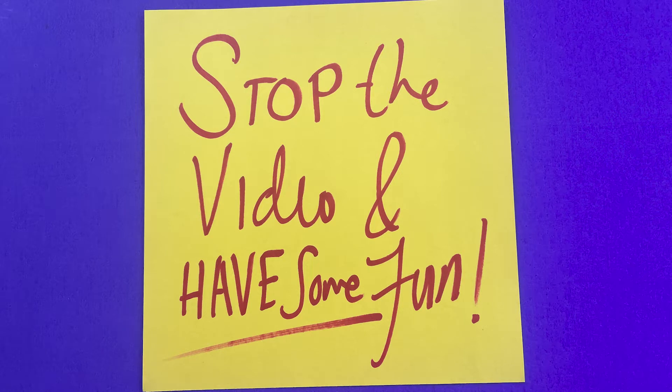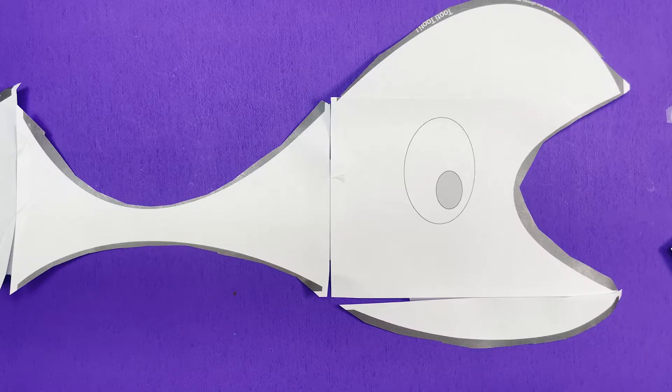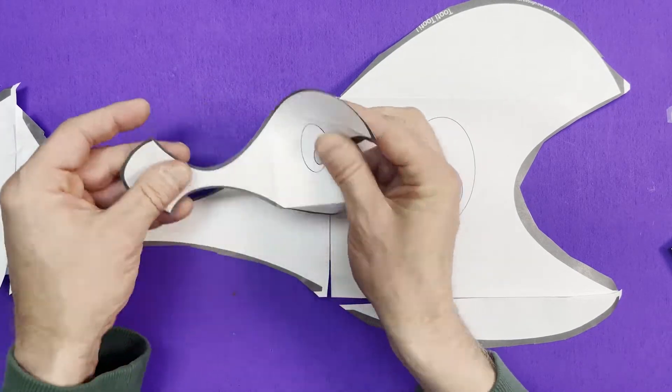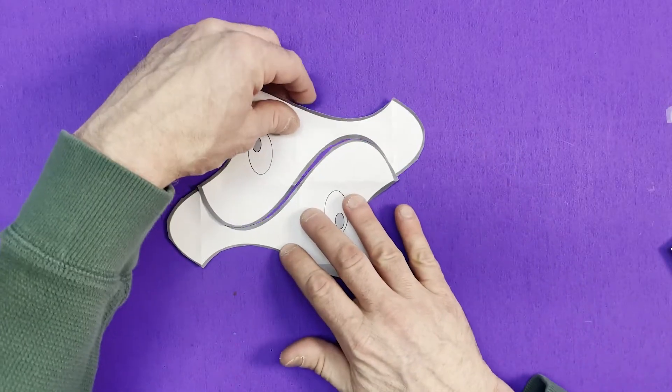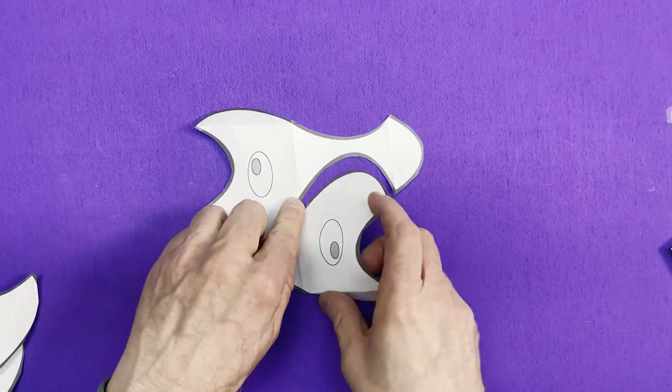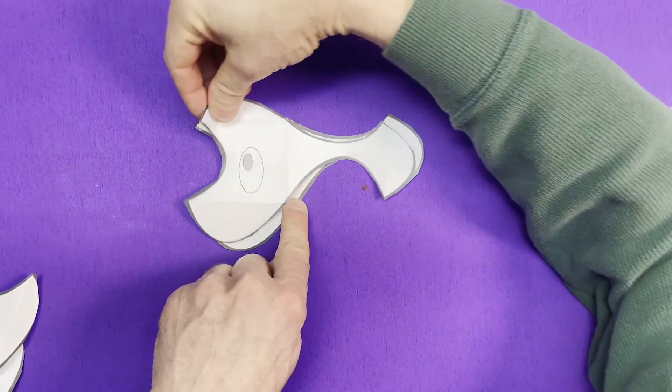To show you, I've shrunk this down to fit in the video. Look, at this corner, the fish fits with another copy by a two-fold rotation.